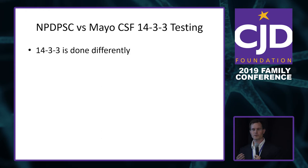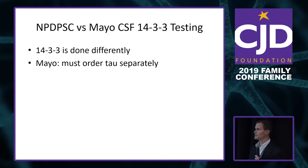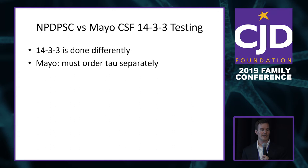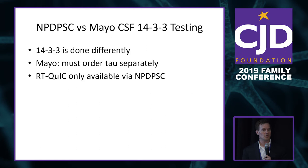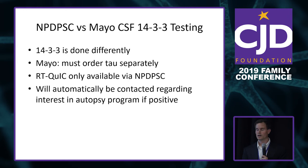Currently we're the only lab that offers 14-3-3, though Mayo also offers it. If a sample is sent to Mayo and only 14-3-3 is ordered, that's all they'll get. At the prion center, you just tell us you think it might be prion disease and we do all three tests automatically — tau, 14-3-3, and RT-QuIC. The prion center is the only place in the country that does RT-QuIC for clinical specimens. If results suggest prion disease, we follow up with the doctor about the CDC-sponsored autopsy program.